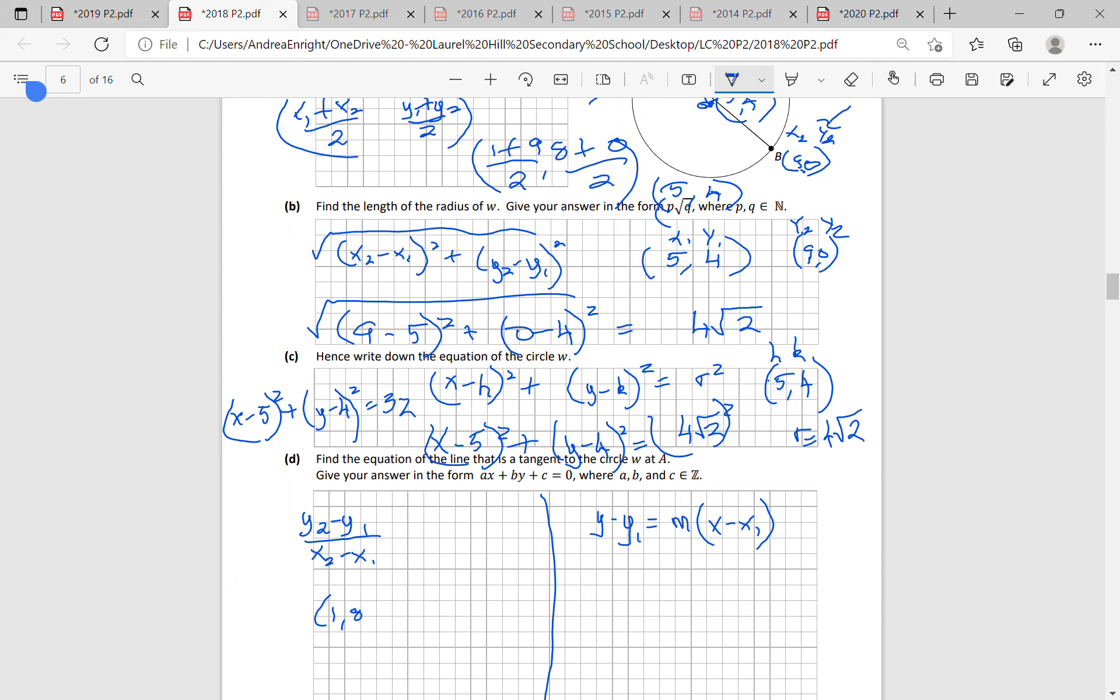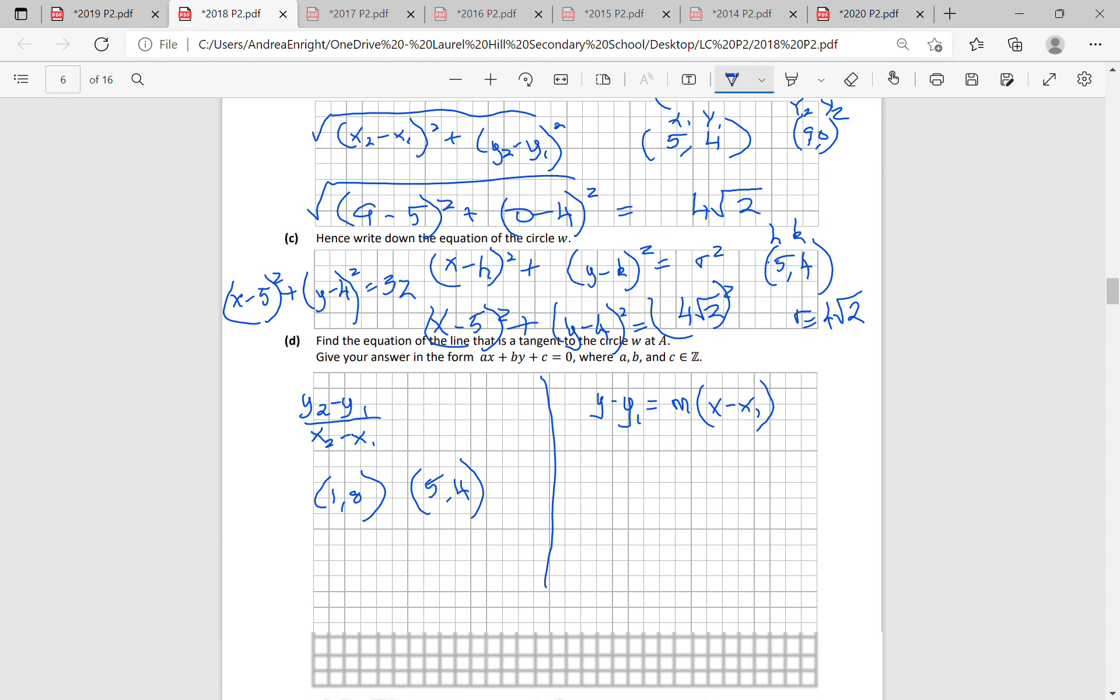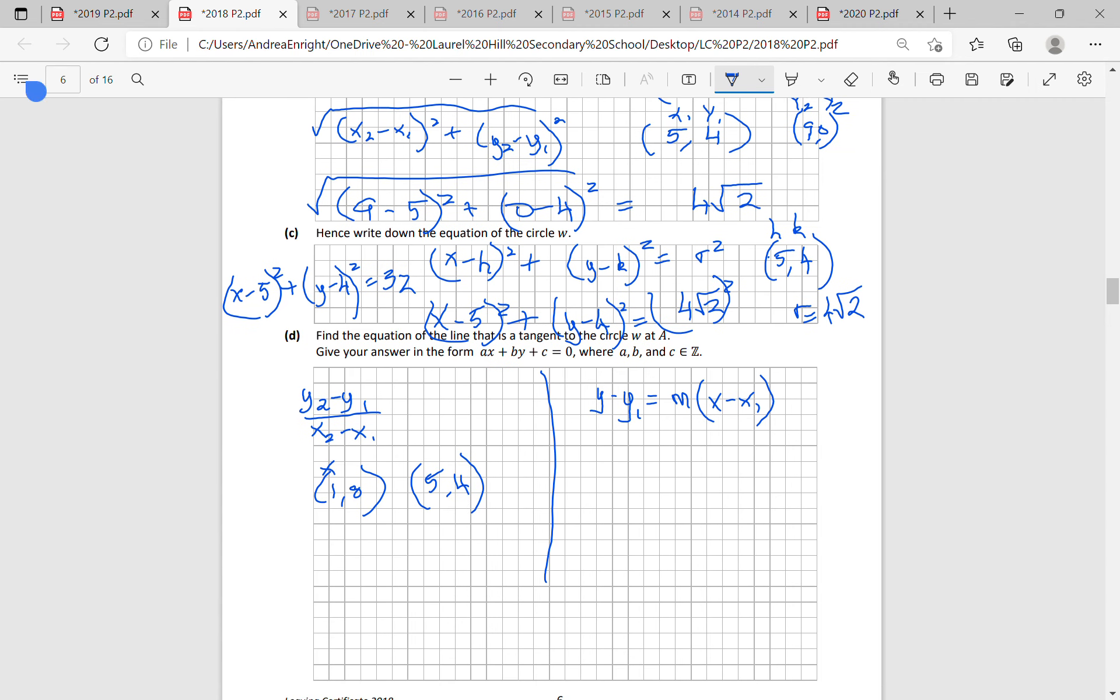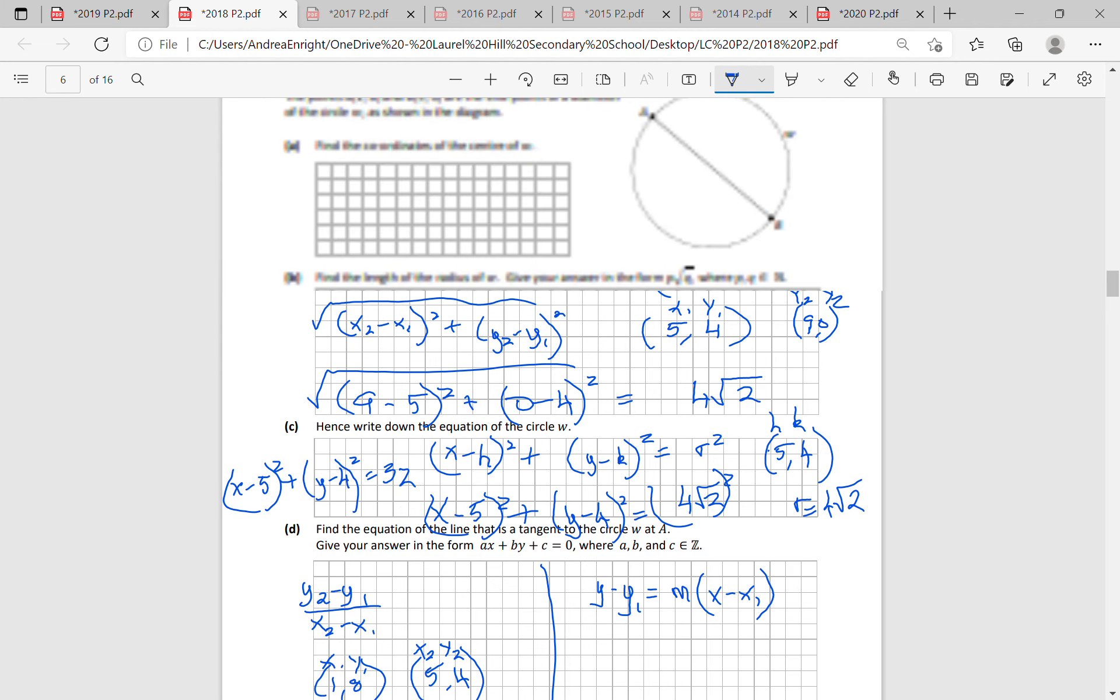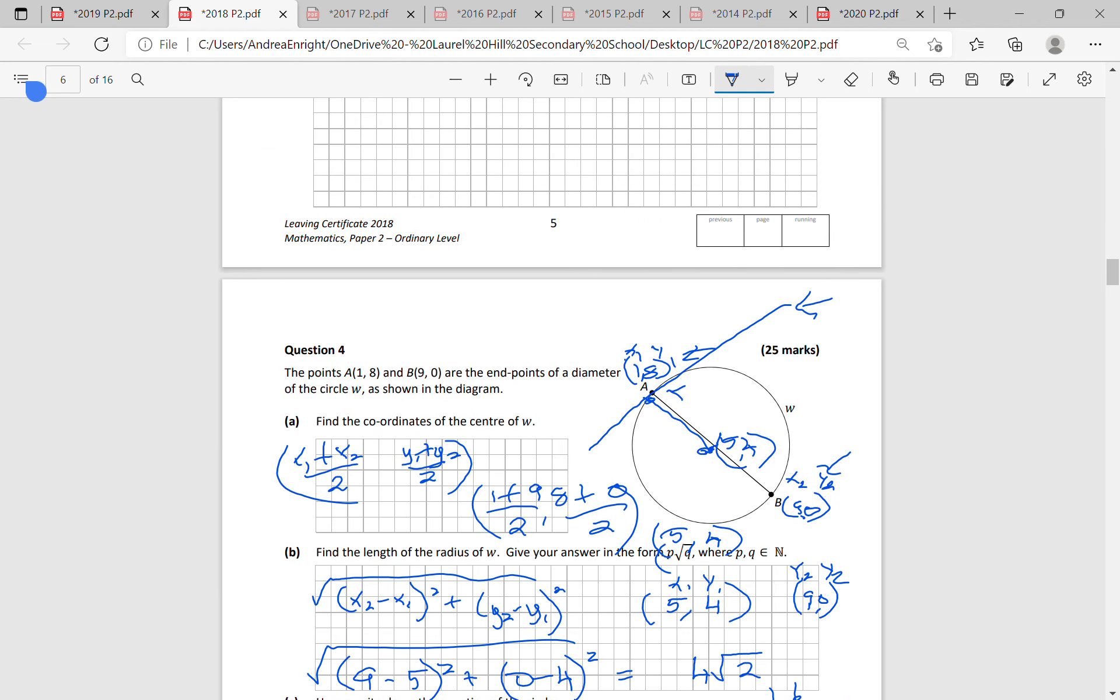So if I get the slope of the radius, which is 1, 8 and 5, 4. So slope formula, this is x1, y1, x2, y2. So that's 4 minus 8 over 5 minus 1. Put that into the calculator and you get minus 1. That's the slope of this line here. So the slope of this line here is minus 1.